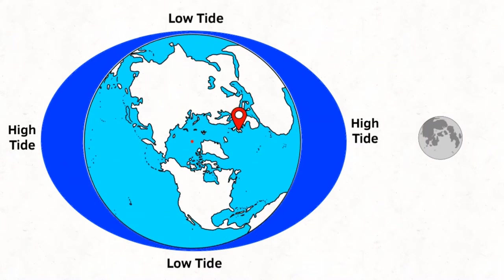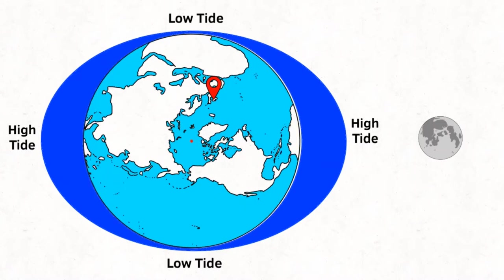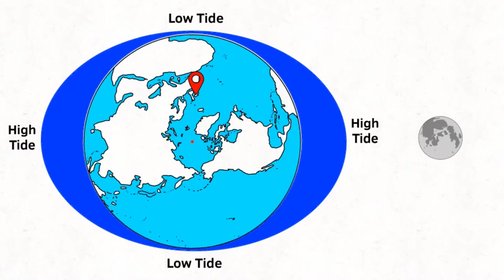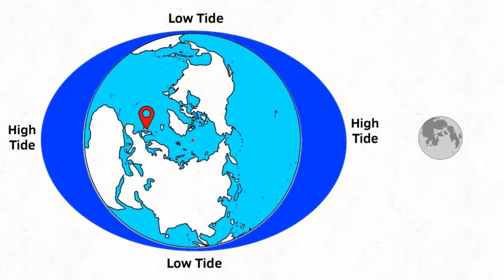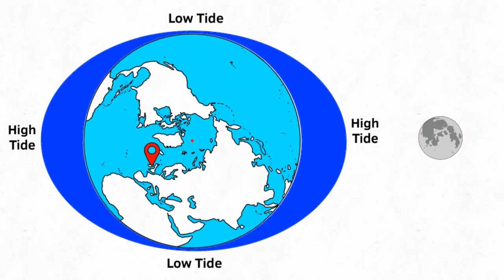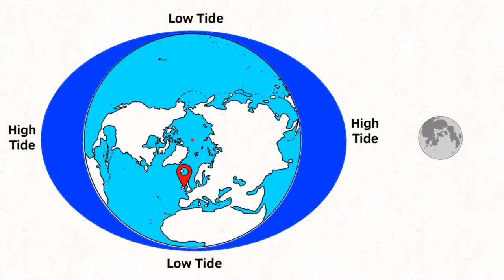So if I place a marker here in Dublin at high water, six hours later as the Earth rotates we'd have low water, six hours later again we'd have high water, and six hours later again we're back to low — due to the fact it takes 24 hours for the Earth to do a full rotation.